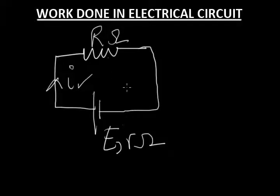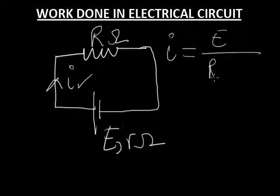Now as we have seen in this circuit, the current I is flowing here, and we already know from Ohm's law that E divided by R plus r is the current.